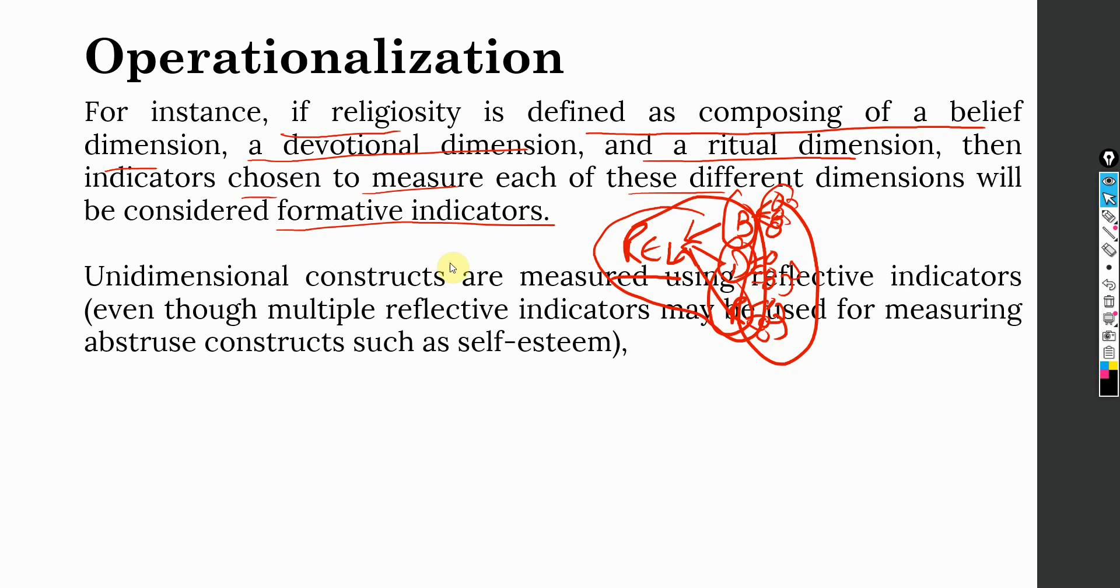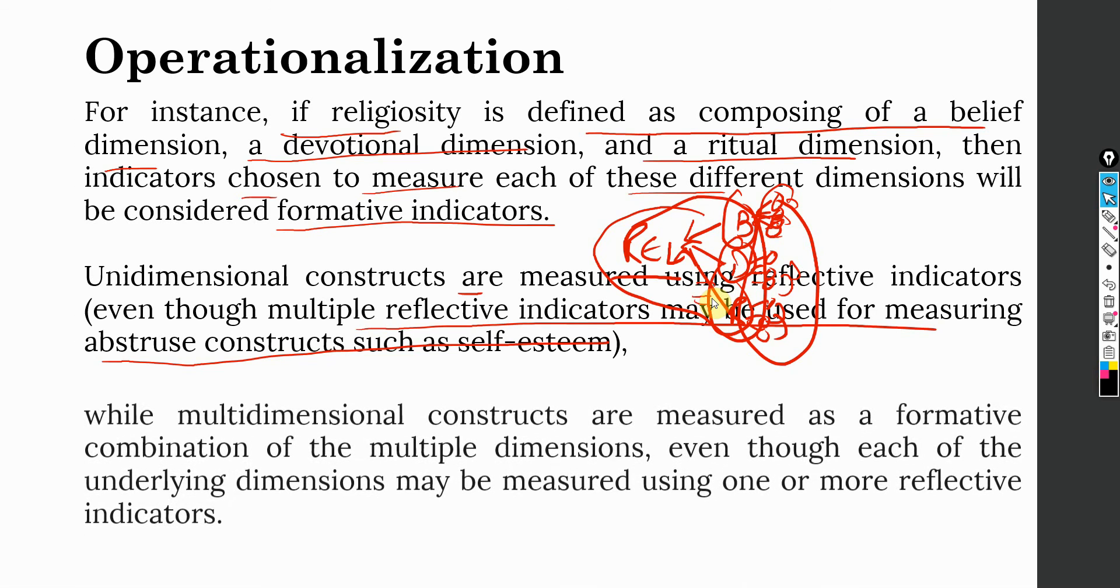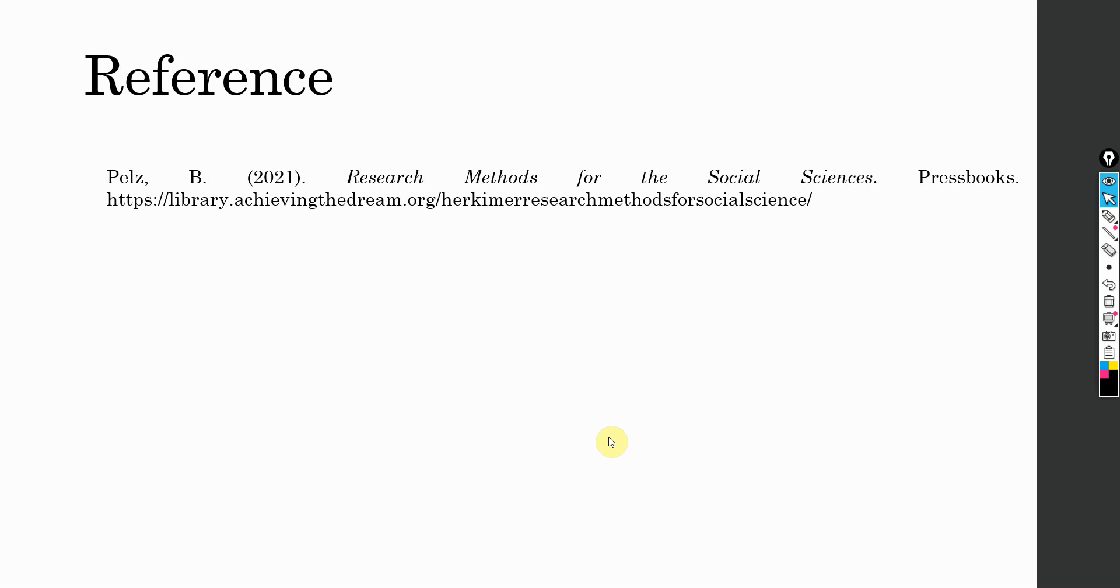Moving on, unidimensional constructs are measured using reflective indicators even though multiple reflective indicators may be used for measuring abstruse constructs such as self-esteem. You are using multiple items to measure a particular construct. Whereas, multidimensional constructs are formative. Look at this - religiosity has sub dimensions. These sub dimensions are forming the higher order construct. Religiosity is your multidimensional construct that is measured using formative combination of multiple dimensions.